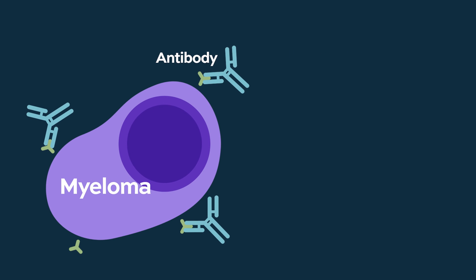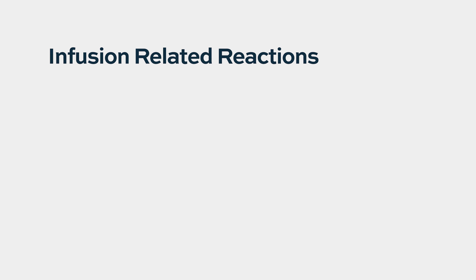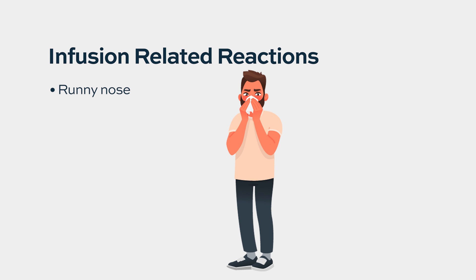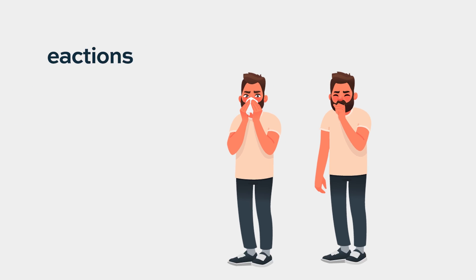Daratumumab or isatoximab binds to all cells that express CD38, including myeloma cells but also cells of the respiratory tract. That's why the first time you receive daratumumab, your nose may be runny, you may have some shortness of breath or coughing. To manage these side effects, we slow down the infusion or sometimes stop it, and all patients tolerate the drug very well.